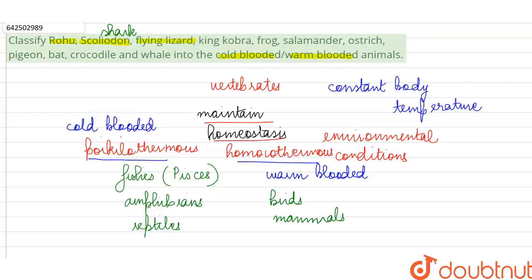After this, flying lizard is going to come under reptiles. King cobra is again a snake, so it is going to come under reptiles. Frog is an amphibian. Frog and salamander both will be under amphibians. And crocodile is again a reptile.